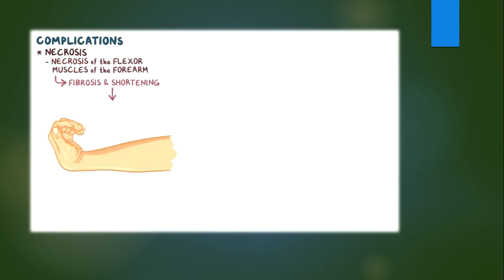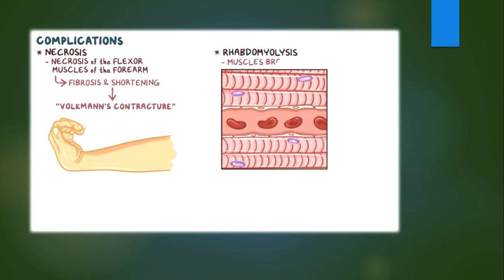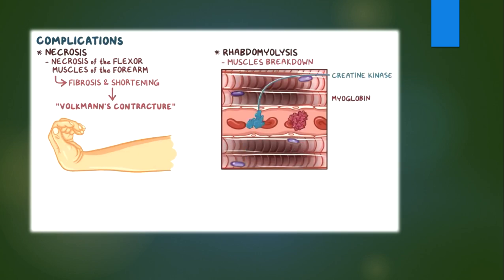Complications such as necrosis can occur when normal blood flow is not established in time, leading to tissue death due to the lack of oxygen. For example, necrosis of the flexor muscles of the forearm leads to their fibrosis and shortening, which results in permanent flexion of the wrist and hand, known as Volkmann's contracture. Another complication is rhabdomyolysis, where muscles break down. Muscle proteins like creatine kinase and myoglobin start leaking out into the bloodstream. Myoglobin is especially toxic for the kidneys and can cause acute renal failure.